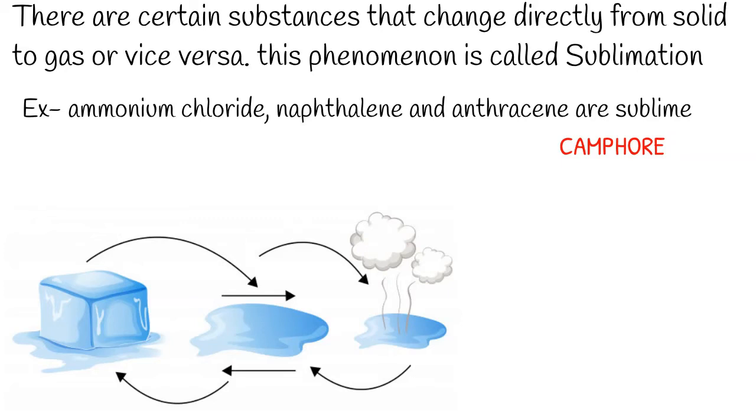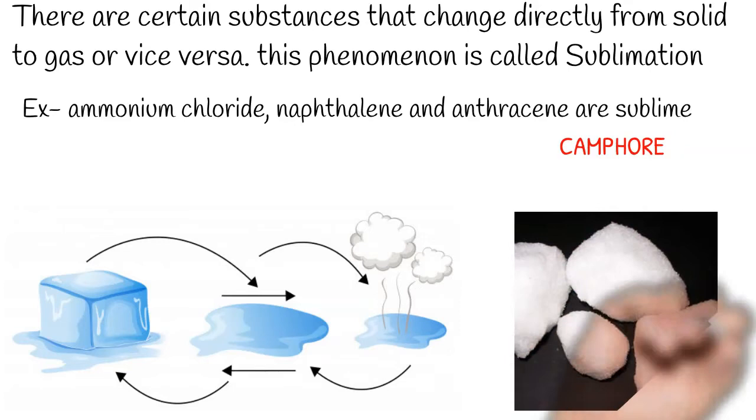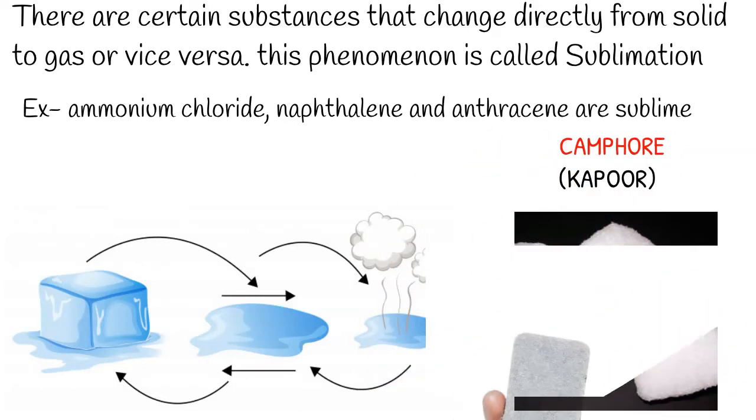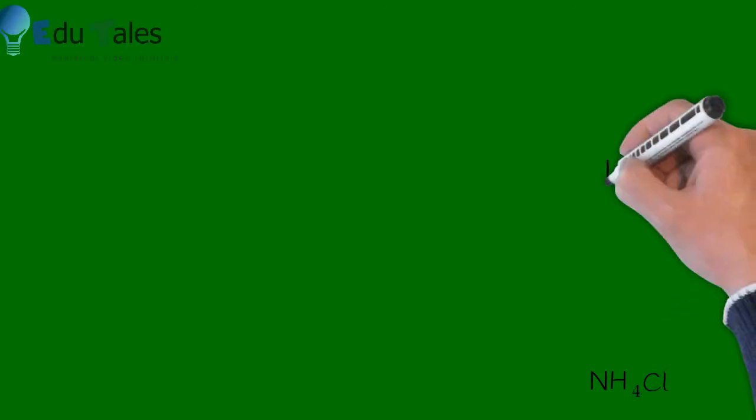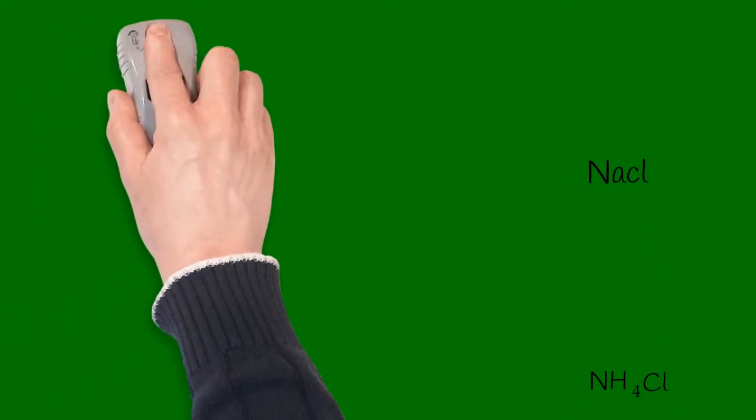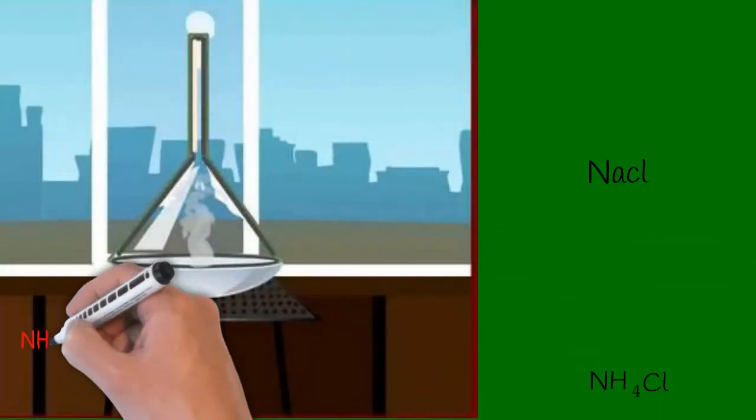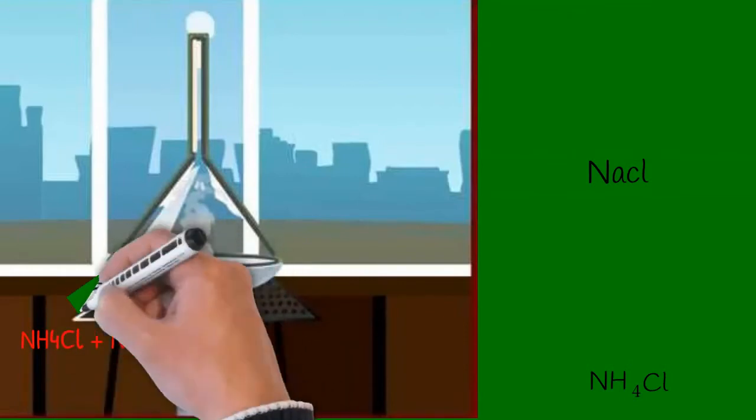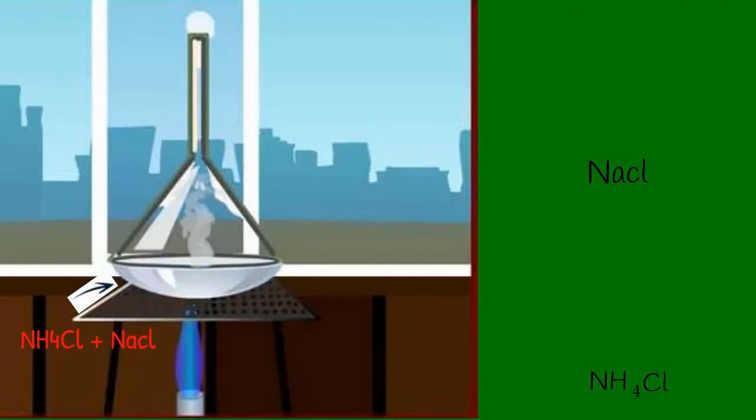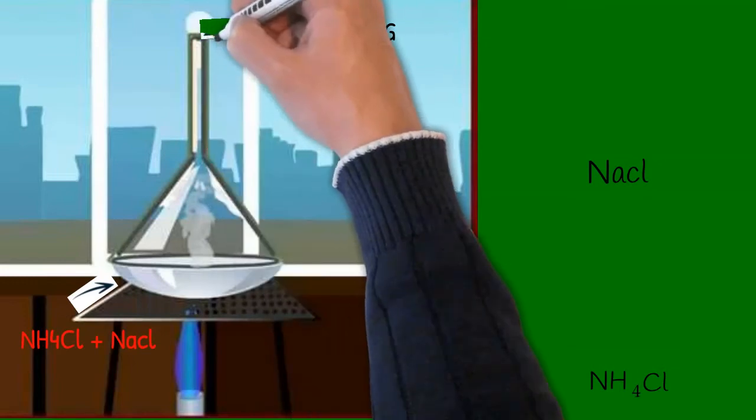This is camphor. Camphor, when heated, converts directly into gas. Let's perform an activity to separate a mix of ammonium chloride and salt. Take a mixture of ammonium chloride and salt in a china dish. Cover it with an inverted conical transparent funnel. At the other end of the funnel, put a cotton plug so that vapor could not come out.